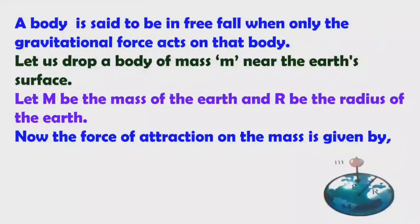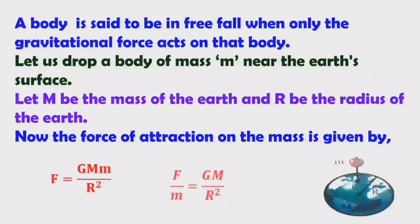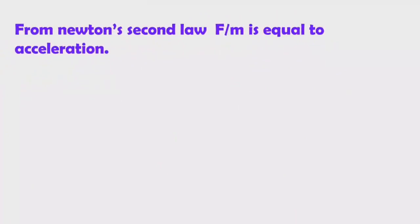The force of attraction on the mass is given by F equals G M m by R square, where capital M is the mass of the earth and small m is the mass of the object. Transposing small m to the left side, we get F by m equals G M by R square. From Newton's second law, F equals m times A, or F by m equals acceleration.